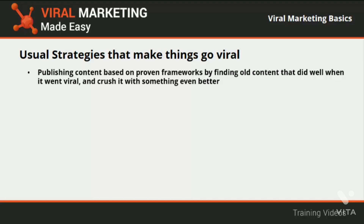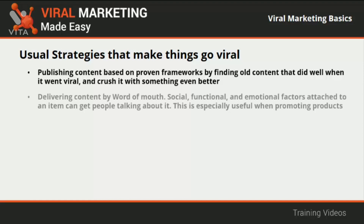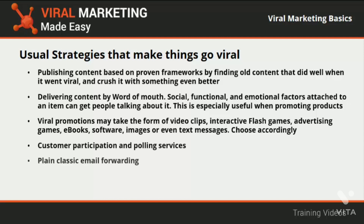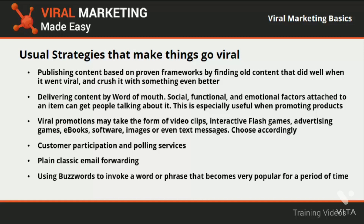Usual strategies that make things go viral include publishing content based on proven frameworks — finding old content that did well when it went viral and crushing it with something even better, identifying gaps and filling those gaps with something relevant for the time of the planned release, then promoting like there's no tomorrow. Delivering content by word of mouth: social, functional, and emotional factors attached to an item can get people talking. Viral promotions may take the form of video clips, interactive flash games, advertising games, ebooks, software, images, or text messages. Other strategies include customer participation and polling services, plain classic email forwarding, using buzzwords, and online advertising.